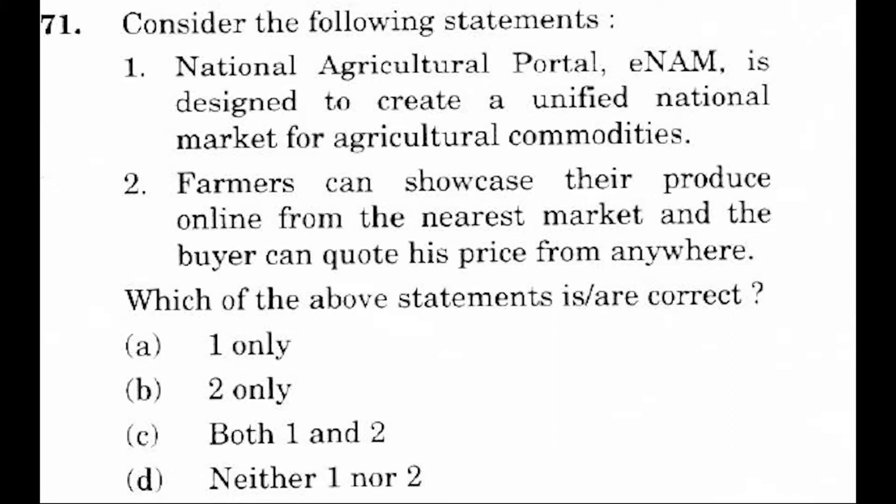Question 71. Consider the following statements. First, the National Agricultural Portal, eNAM, is designed to create a unified national market for agricultural commodities. Second, farmers can showcase their produce online from the nearest market and the buyer can quote his price from anywhere. Which of the above statements is or are correct?